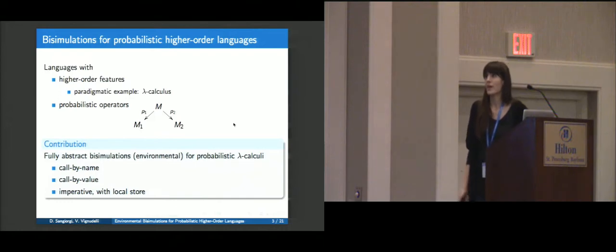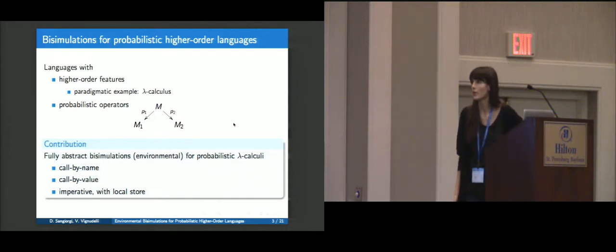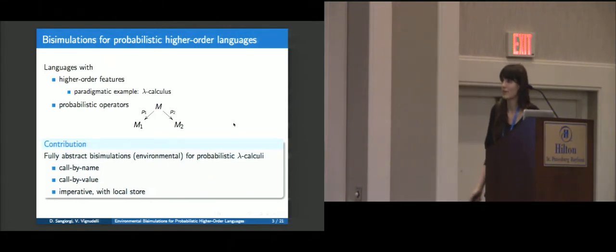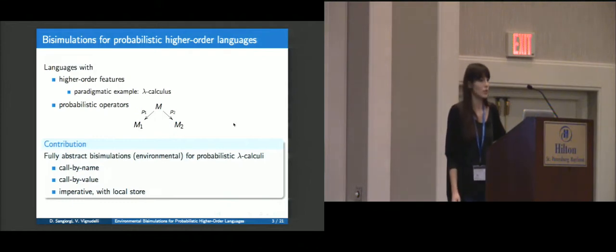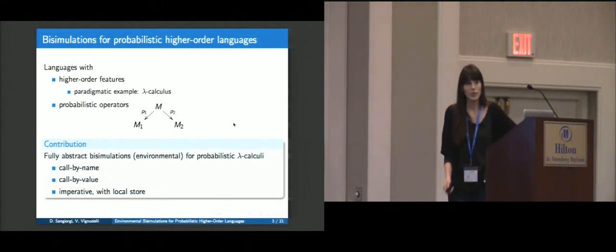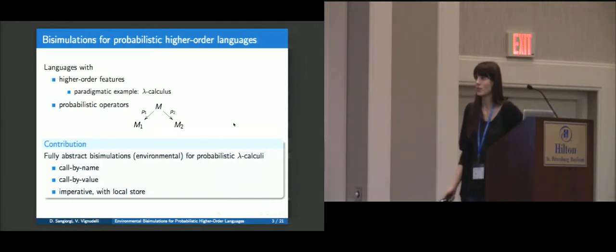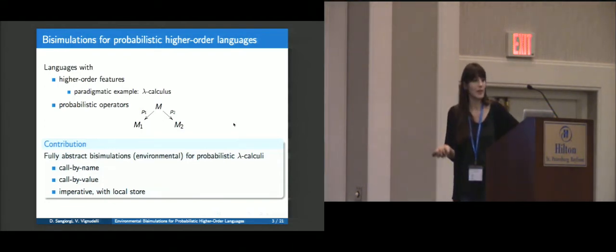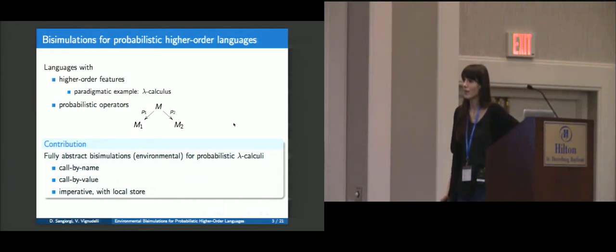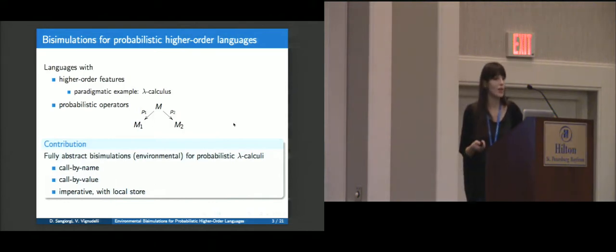In our work, we have considered bisimulations for probabilistic higher-order languages — languages with higher-order features, and as a paradigmatic example, the lambda calculus. We also have probabilistic operators, so M goes with probability P1 to M1 and with probability P2 to M2. Our contribution is finding a fully abstract bisimulation — in particular, environmental bisimulation — for probabilistic lambda calculi, both in call-by-name and call-by-value, and in lambda calculi with probabilities and imperative features, in particular local store.